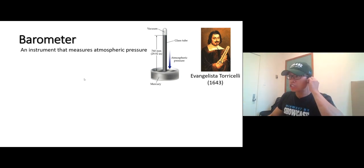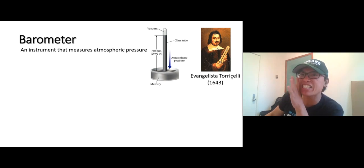A barometer is an instrument that measures atmospheric pressure. It was invented in 1643 by Evangelista Torricelli. The barometer consists of a container filled with liquid mercury.